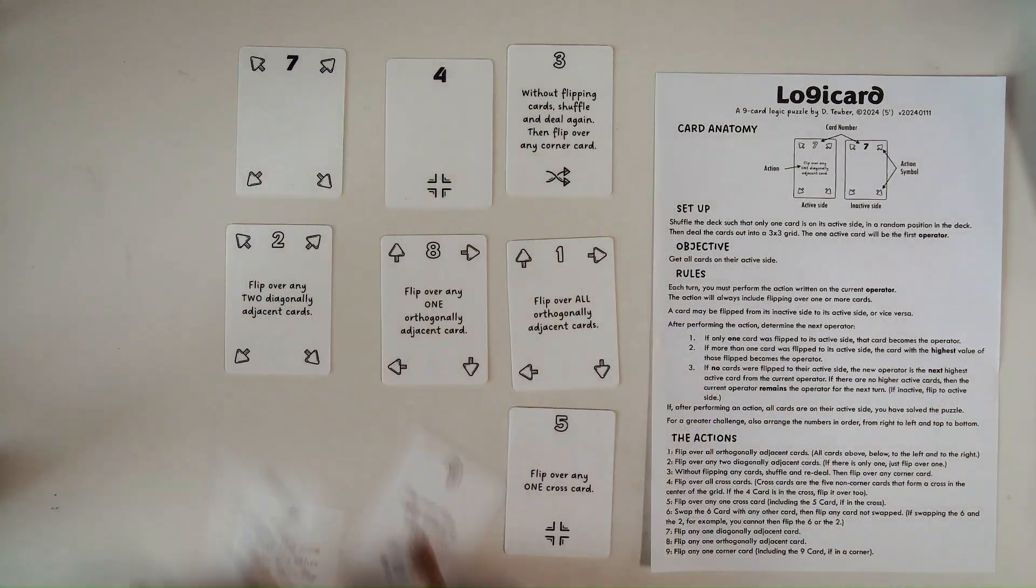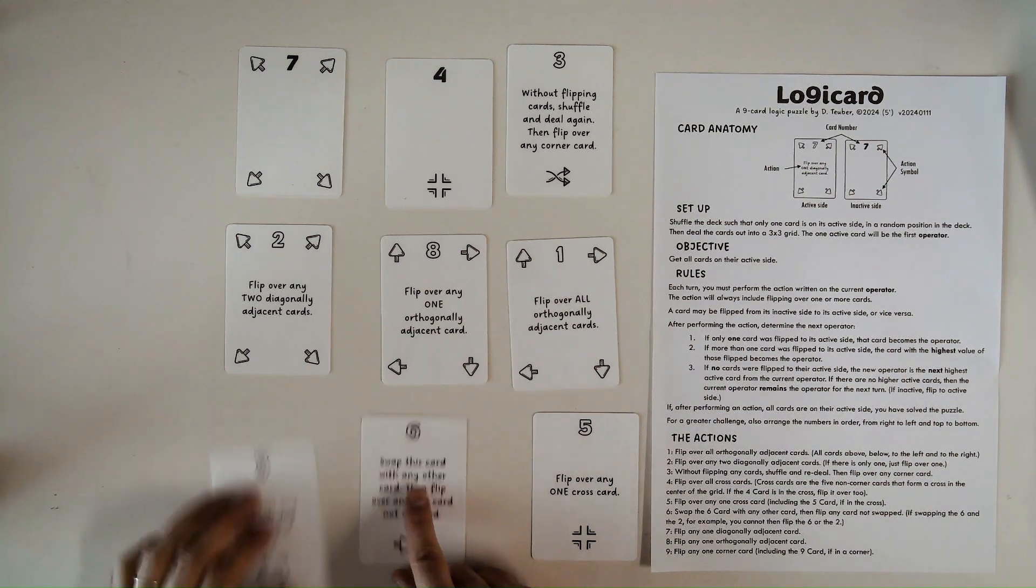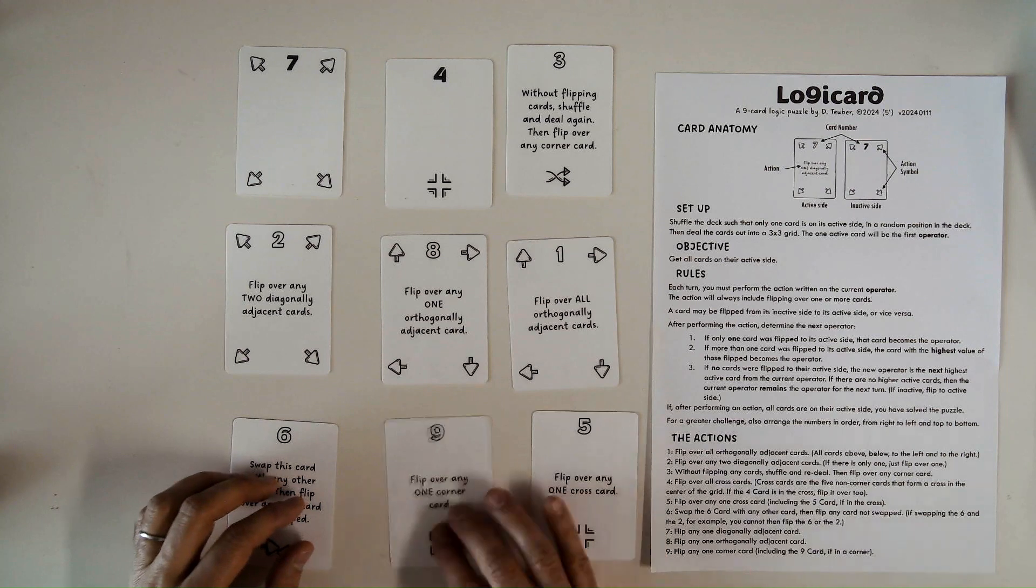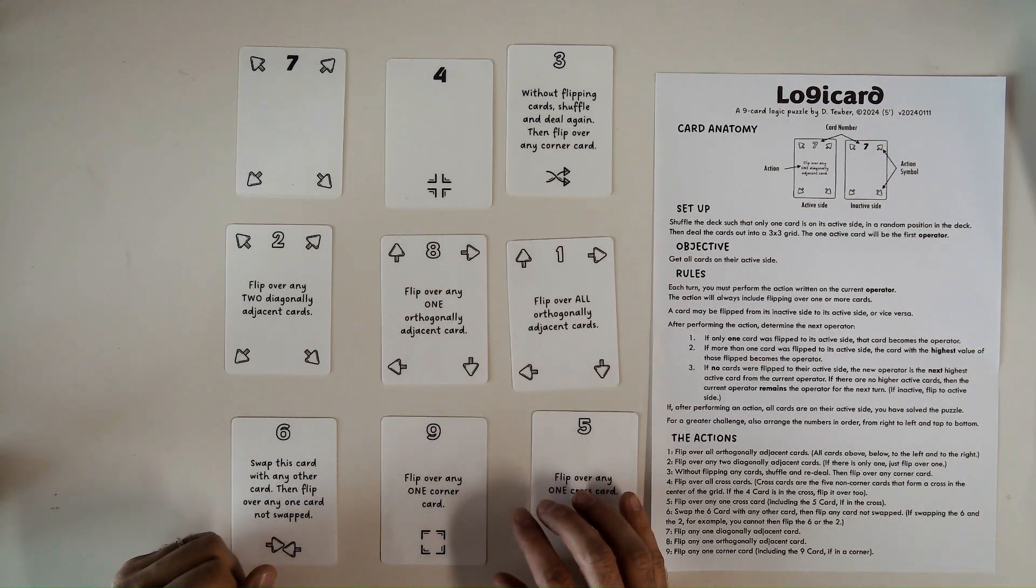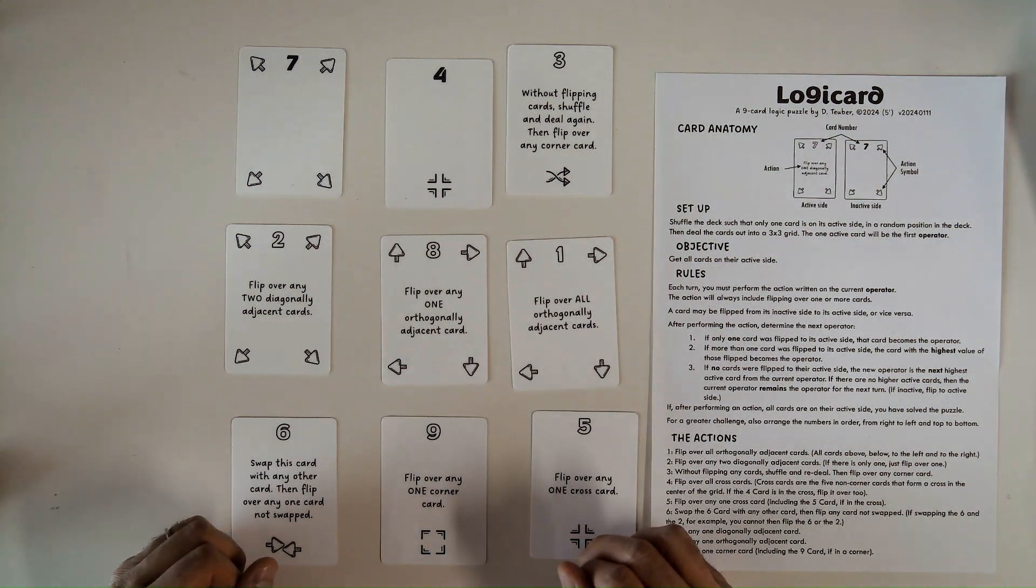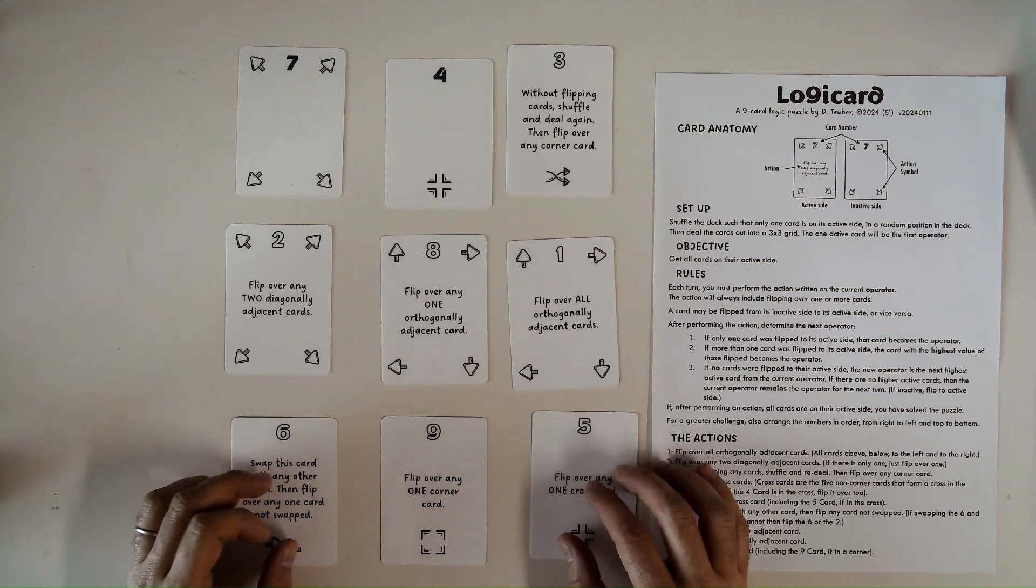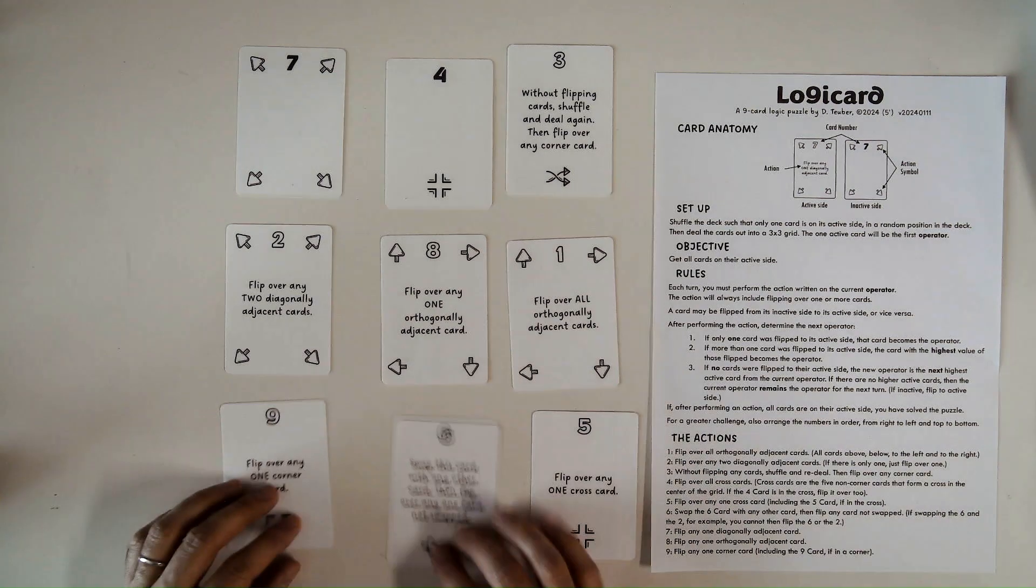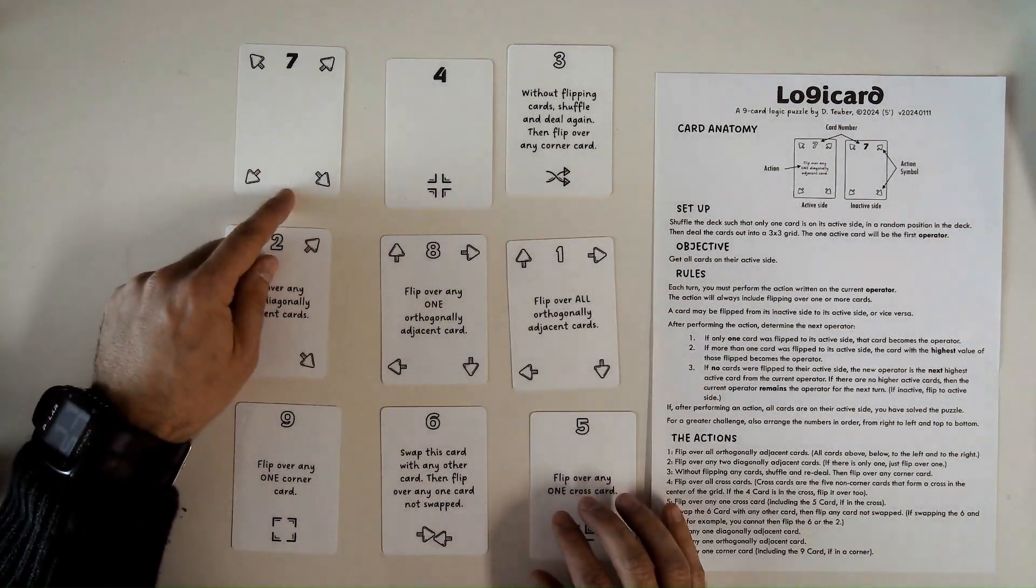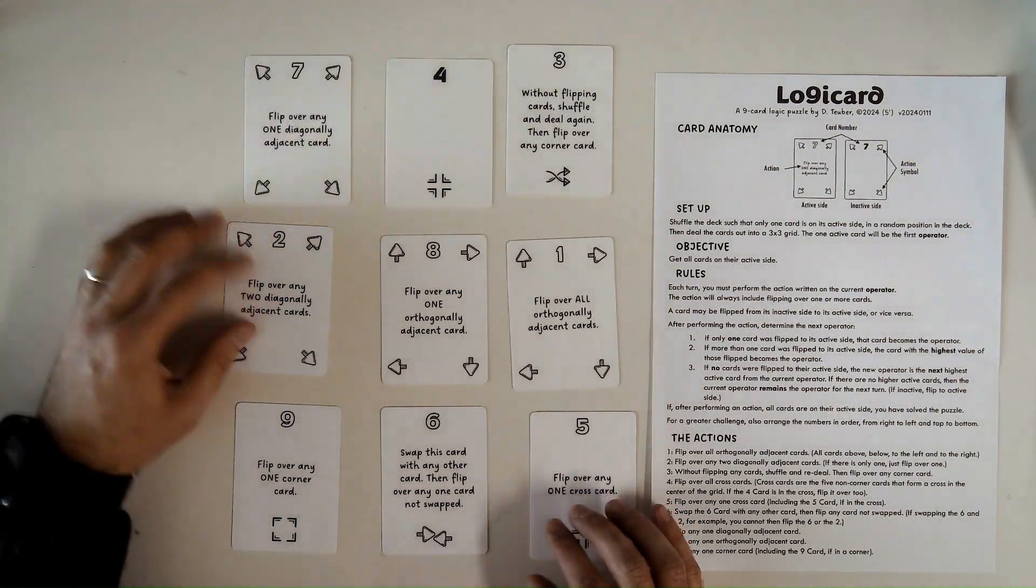So I could switch the 9 and the 6. But then I cannot also flip that card, either of those cards. So what do I want to do? Ideally, I like to flip these two cards. Let's just flip the 6 and the 9 because I don't know what I'm doing. And then I'm going to flip this. I can choose any card.